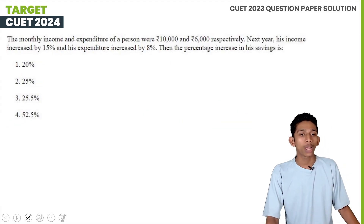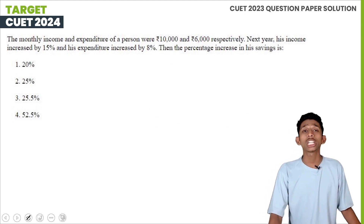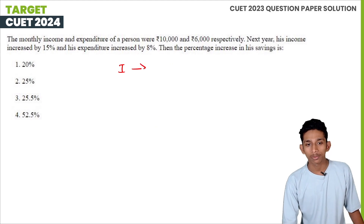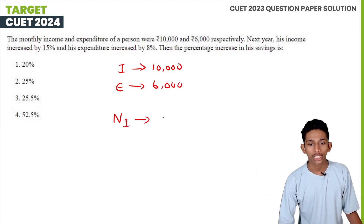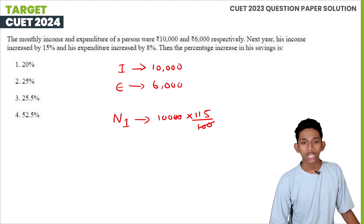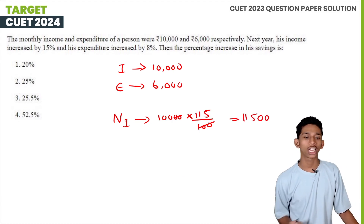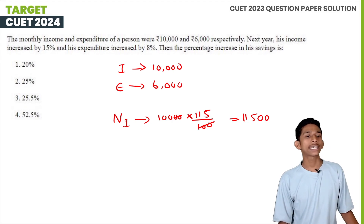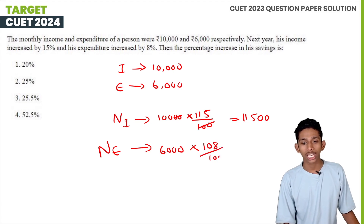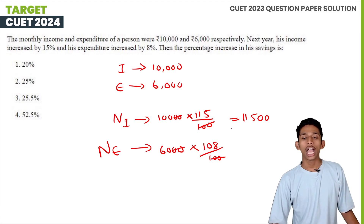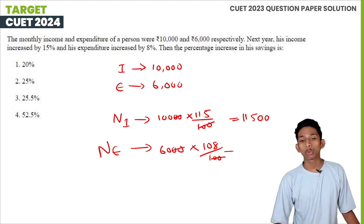The monthly income and expenditure of a person were Rs. 10,000 and Rs. 6,000 respectively. Next year, his income increased by 15%, so new income = Rs. 10,000 × 1.15 = Rs. 11,500. His expenditure increased by 8%, so new expenditure = Rs. 6,000 × 1.08 = Rs. 6,480.